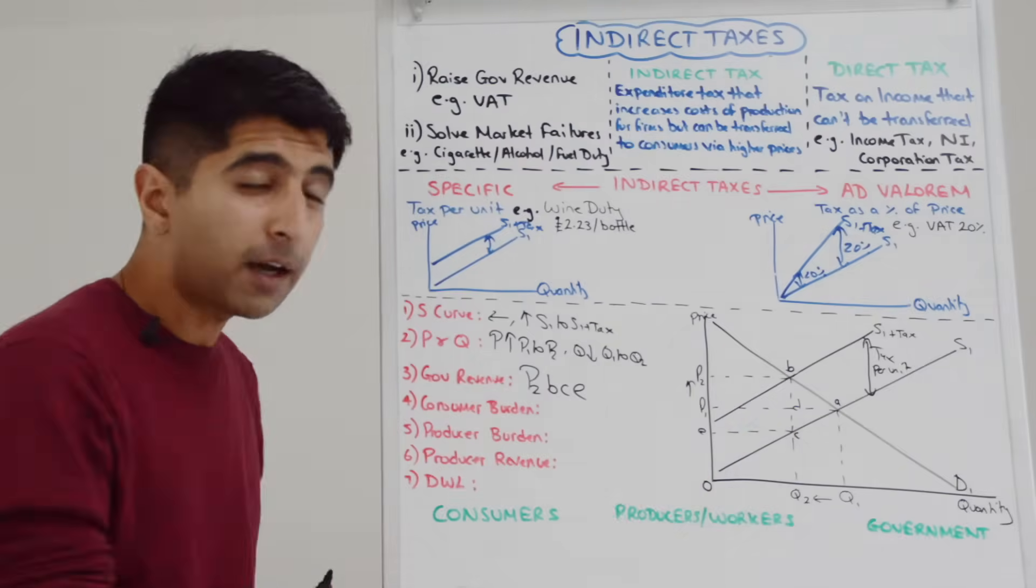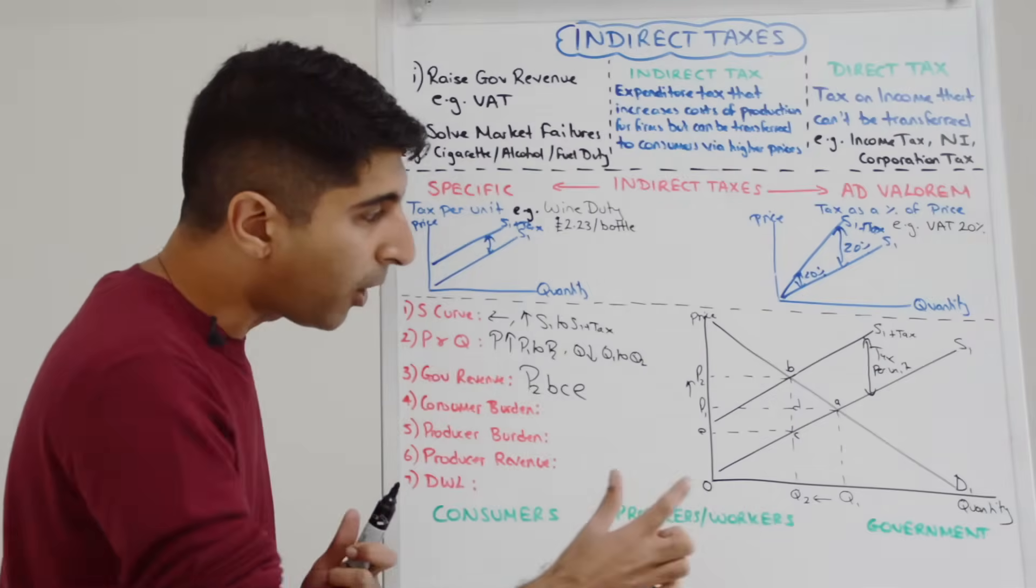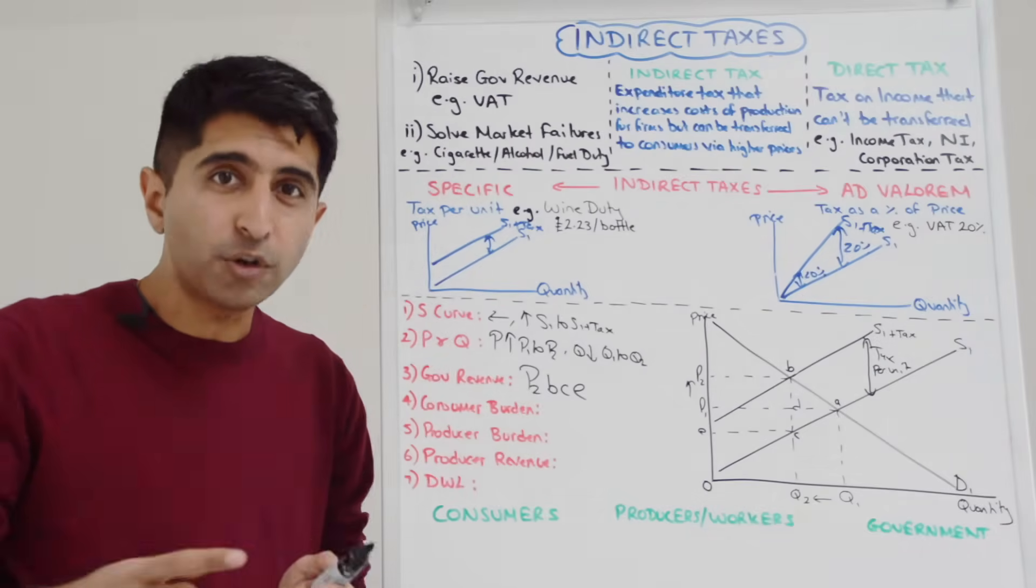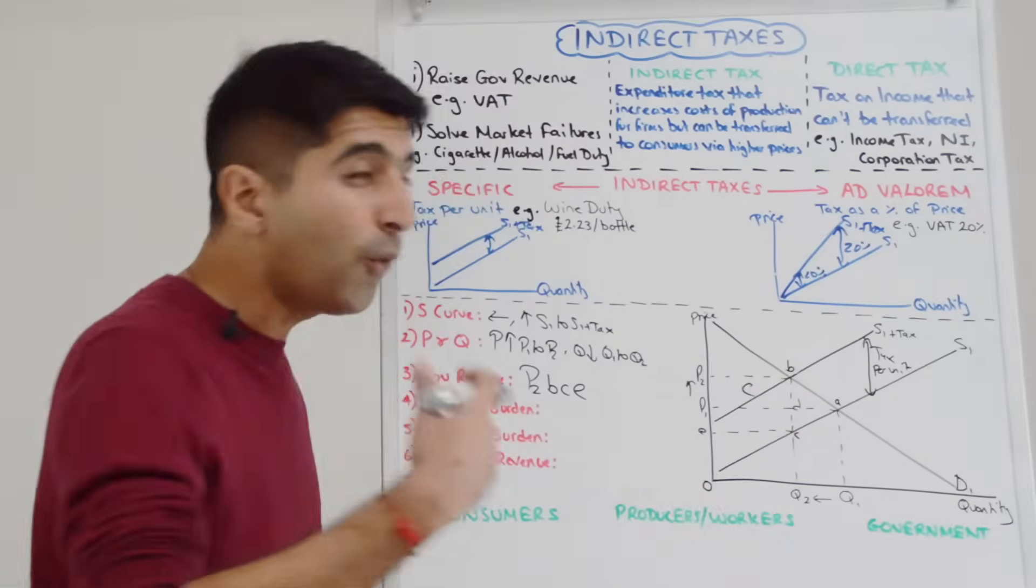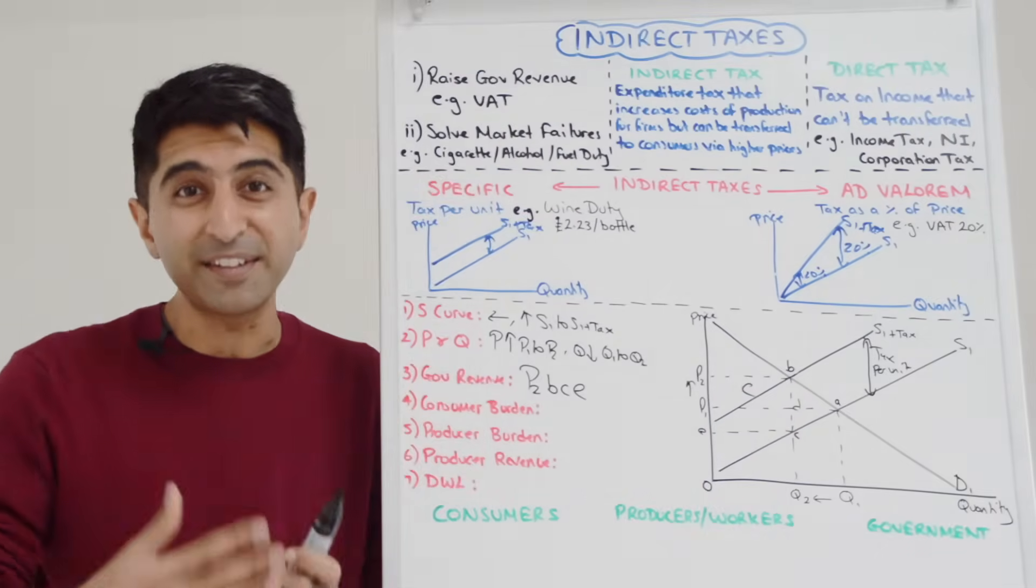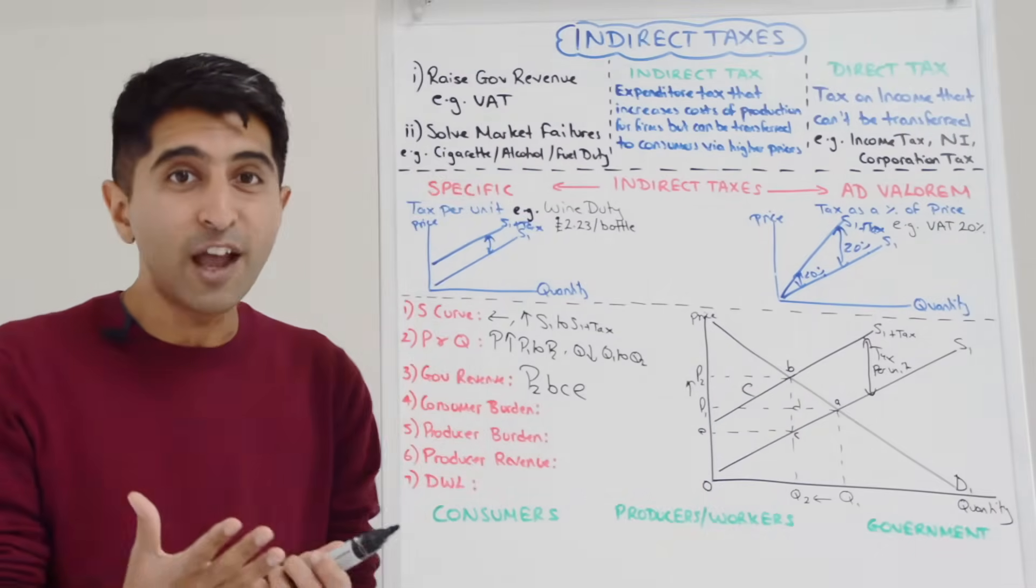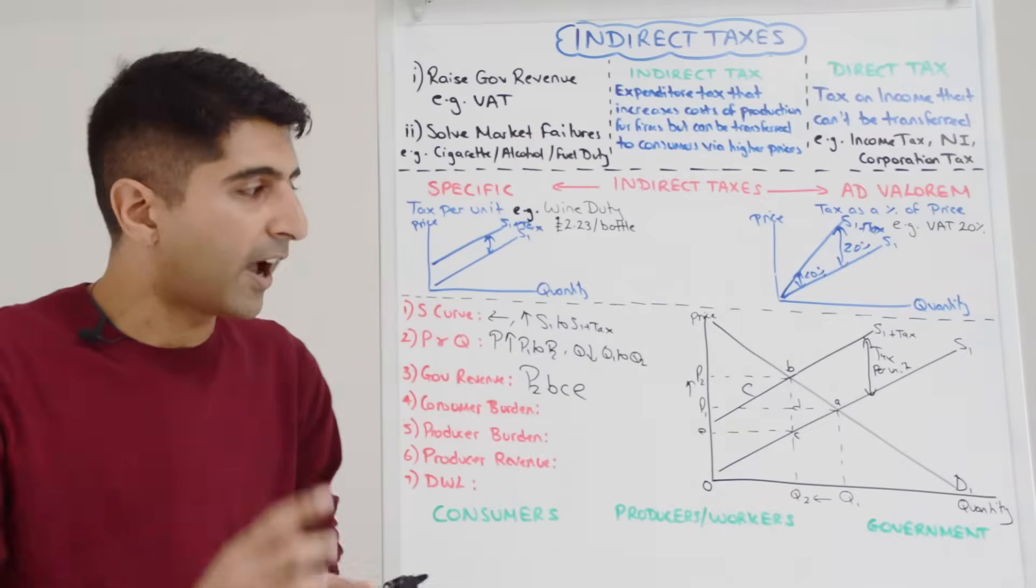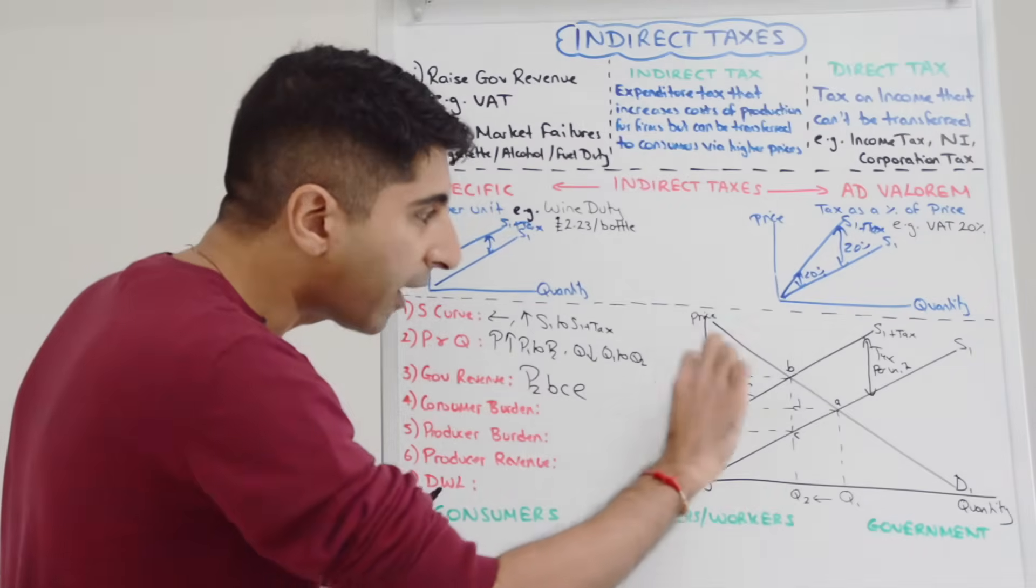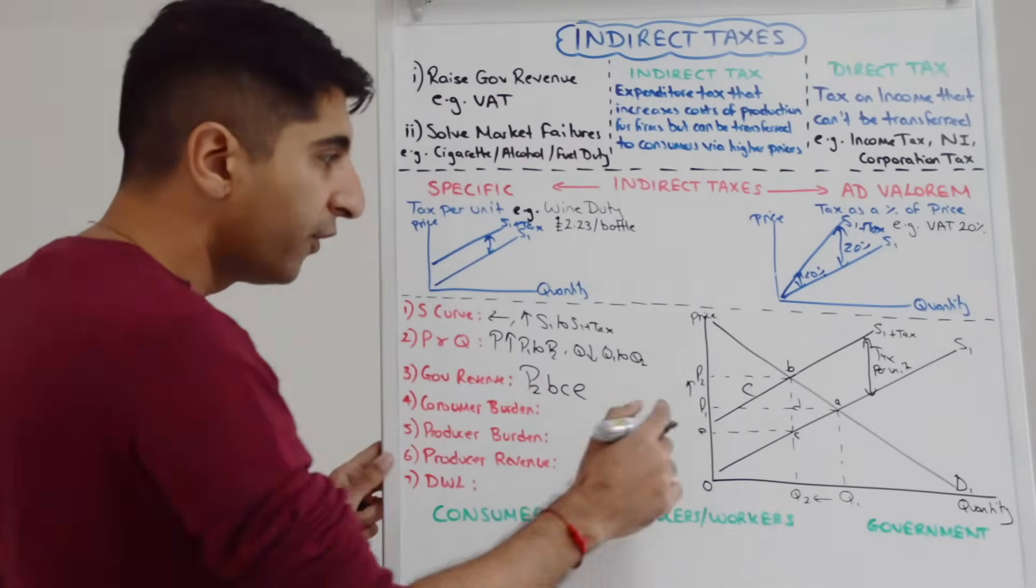To work that out you look at that government revenue box. Of that box, the difference in price portion is always the consumer burden. The only reason consumers are paying higher prices is because of this indirect tax which is partly passed on to them by higher prices. So the difference in price part of the box is always the consumer burden.